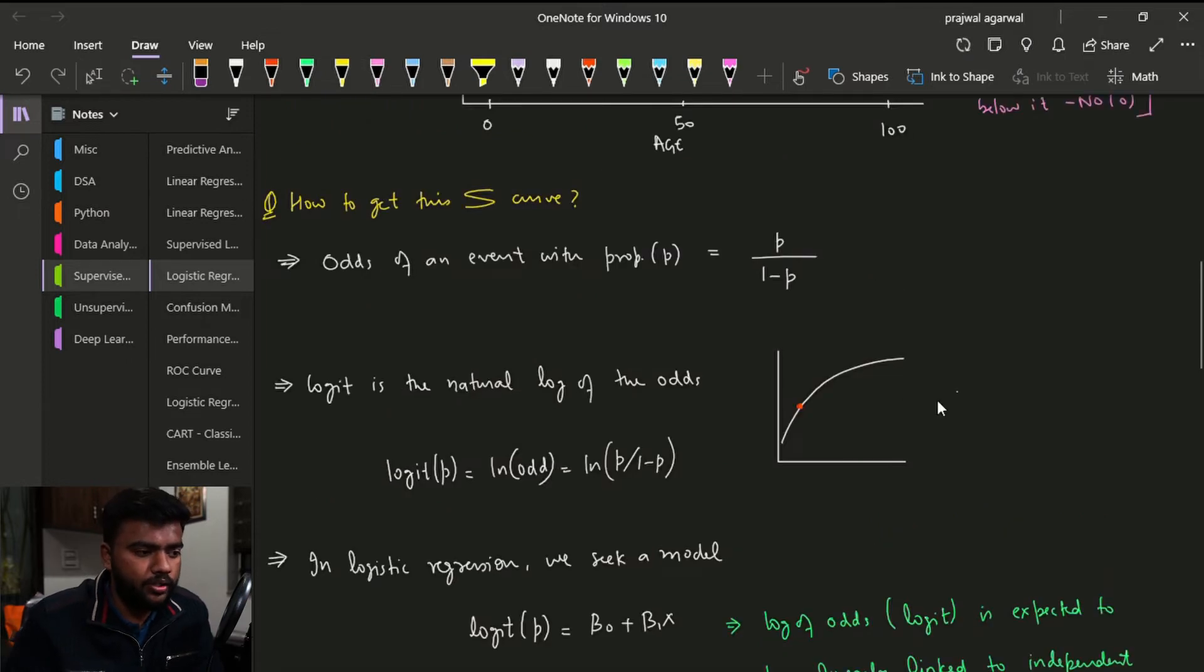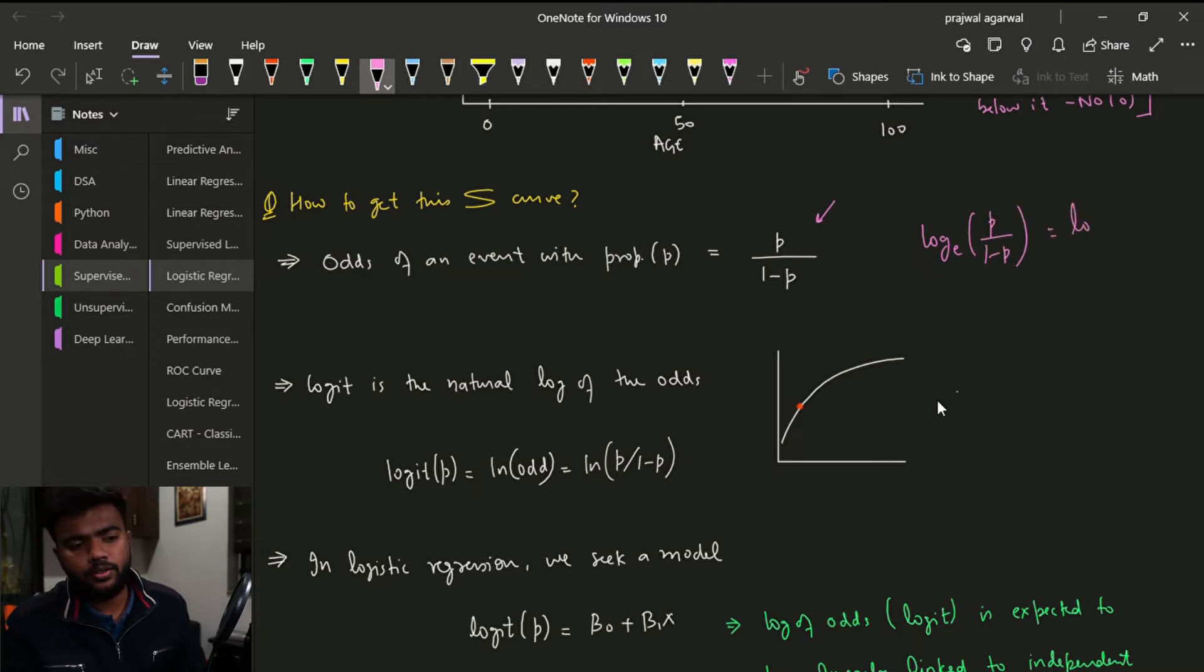Now the odds of a particular event happening, whose probability is p, are given by this expression: p upon 1 minus p. Now if we take a natural log of this expression, it will be log to the base e, and we have p upon 1 minus p, right? And this is also equal to logit expression of p.